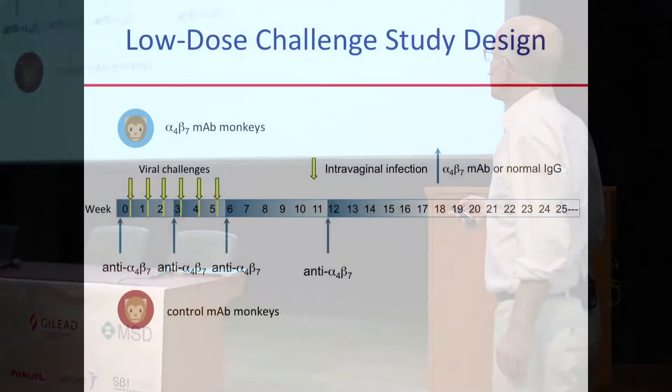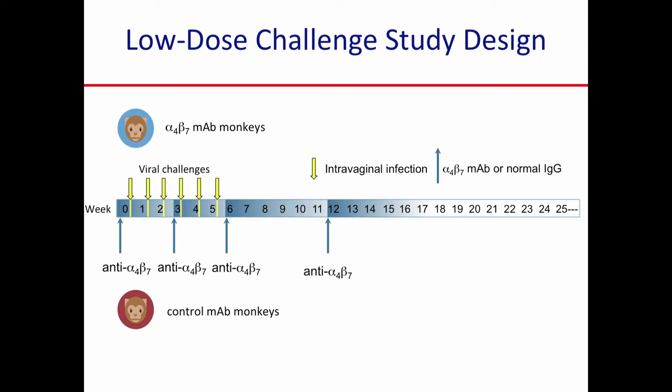Here is the scheme of what we did. We take monkeys treated either with an alpha 4 beta 7 antibody or a control antibody, given that antibody on day minus 3. Then once a week, the animals were challenged with an SIV virus. Every single week the animals were given a blood test to see if they had become infected. The antibody was given at day minus 3, then on week 3, week 6, and week 12.